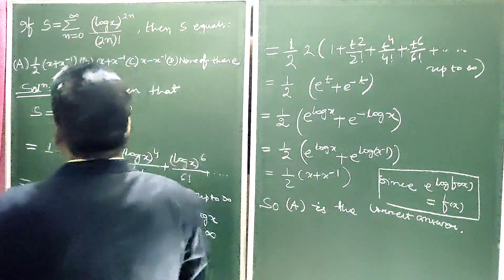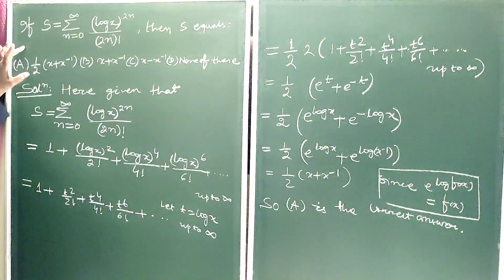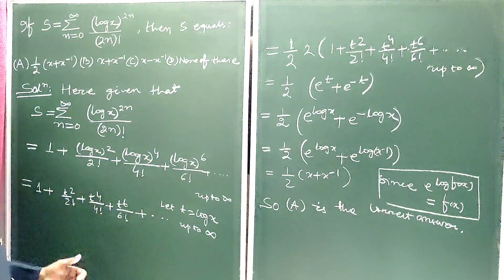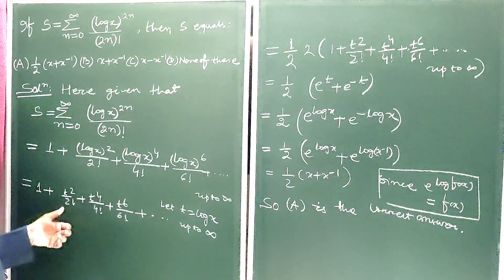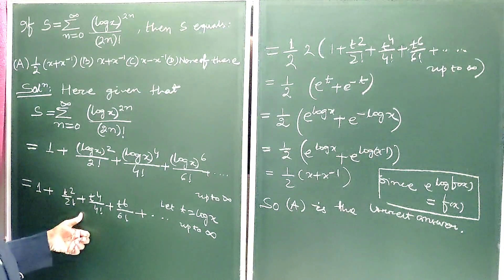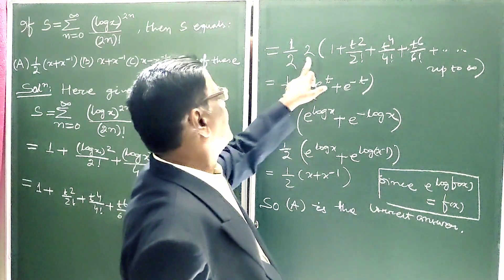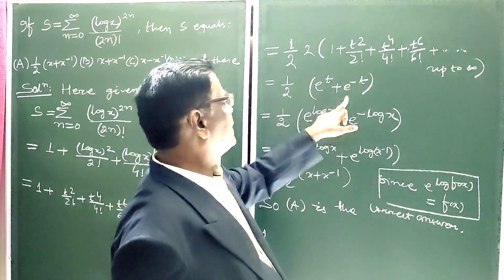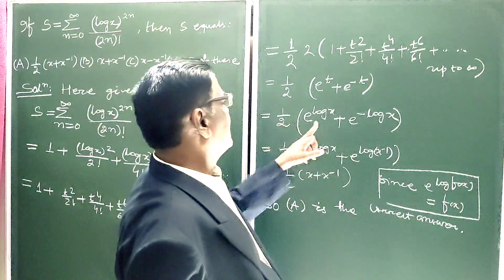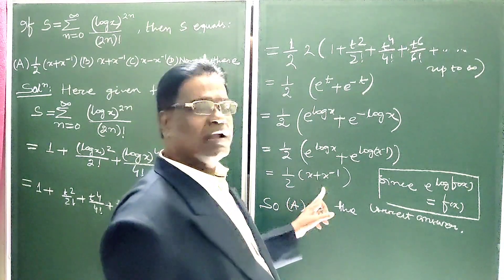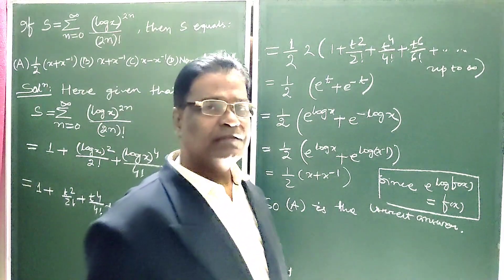To summarize: S is a logarithmic series and we found its value by expanding the series, substituting n equals 0, 1, 2, 3. Then taking t equals log x, we rewrote the series. By multiplying and dividing by 2, the expression becomes e to the power t plus e to the power minus t. Putting t equals log x, the final answer is (1/2)(x plus x to the power minus 1). So option A is the correct answer.